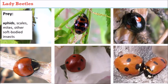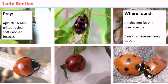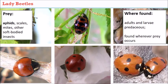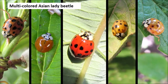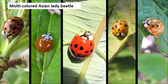Aphids are probably the most common prey, but they'll also feed on scale crawlers, spider mites, and soft-bodied insects generally. One of the most common species I've seen is the introduced multi-colored Asian lady beetle, which occurs in colors from yellow to red with various spots. It's recognized by the letter M shape on the white area of the elytra on their backs.